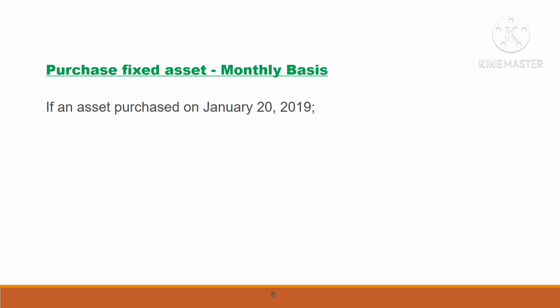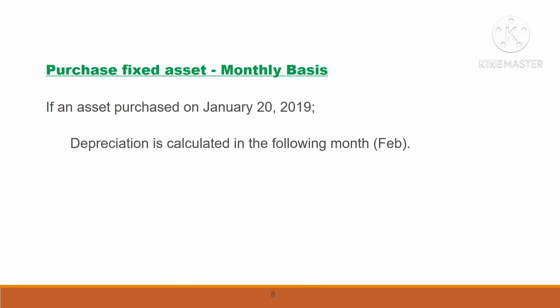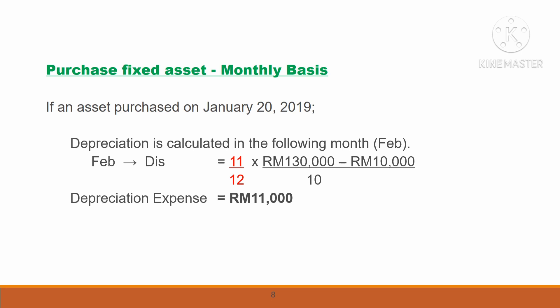The next case: purchasing a fixed asset based on a monthly basis. If we purchase on January 20th 2019, using the same figures — cost RM$130,000, residual value RM$10,000, useful life 10 years — we exclude January because the purchase date is more than 15 days into the month, meaning less than 15 days remain. So we calculate only 11 months out of 12, giving depreciation of RM$11,000.